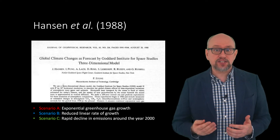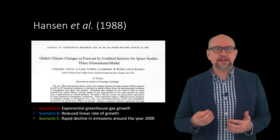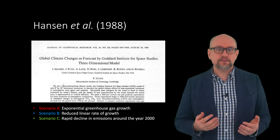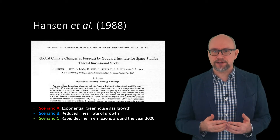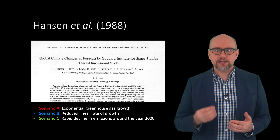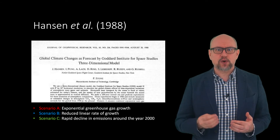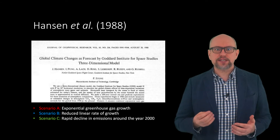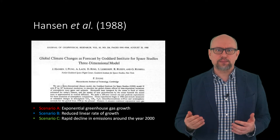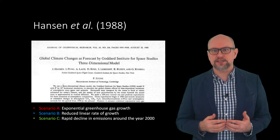Scenario A was essentially a worst case scenario, whereas Scenario C was the best case, and Scenario B was the most likely scenario. None of these future scenarios were an exact match to what happened, of course, and we now understand and simulate more of the complex drivers of change which were not included in Hansen's work.